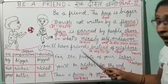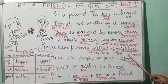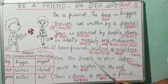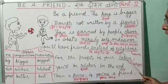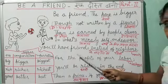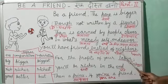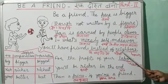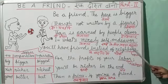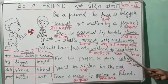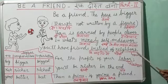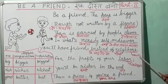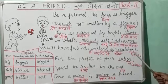You will have friends instead of neighbors. Tumhare paas honge dost padosi ke badle mein — jo tumhare padosi hain unke badle mein wo dost ban jaenge. Yahan par ek cheez aur gaur karne wali hai: yeh American Poet ke dwara likhi gayi kavita hai, to unhone yahan American English ka upyog kiya hai — N-E-I-G-H-B-O-R-S.